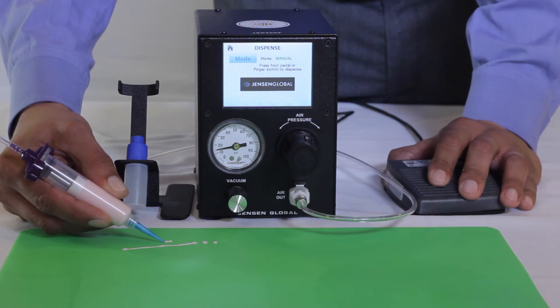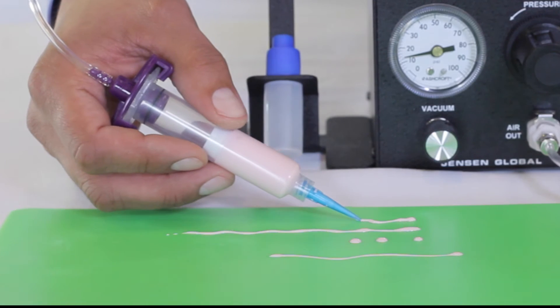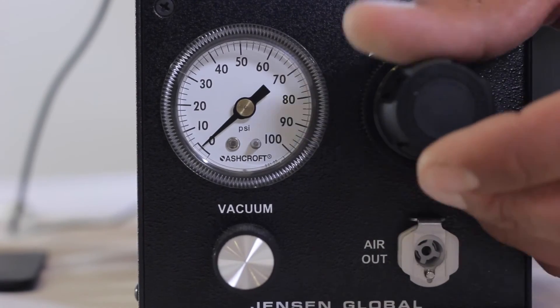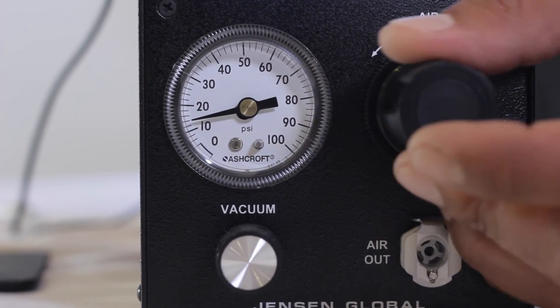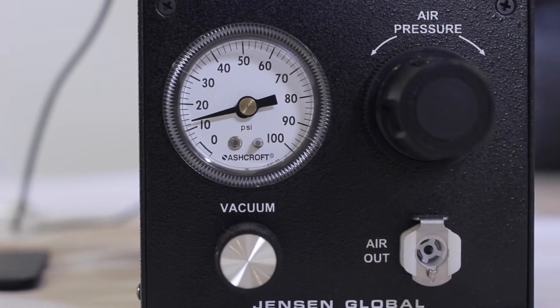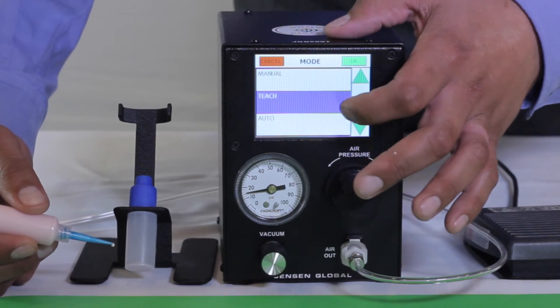This mode also allows dispensing without any programming where the amount of fluid dispensed is solely based upon the user's actuation of the foot pedal. Material deposit volume and flow rate can be increased or decreased by adjusting the air pressure or changing the dispensing tip size. Press the Mode button to go back to the dispensing mode options.